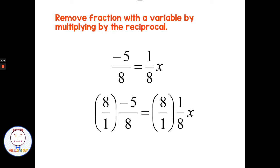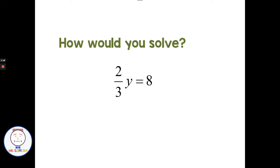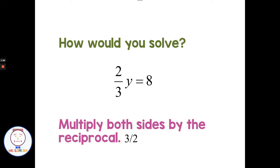That gives us one x, which gets the x by itself. On the other side of the equation we get the number part of our answer: eight times negative five is negative forty, divided by eight gives us negative five. So whenever you have a fraction in front of a variable, we can just get rid of it by multiplying by the reciprocal. For example, we have two thirds y — to get rid of the two thirds, we multiply by the reciprocal, which is three halves. Multiplying both sides by three halves isolates the y.